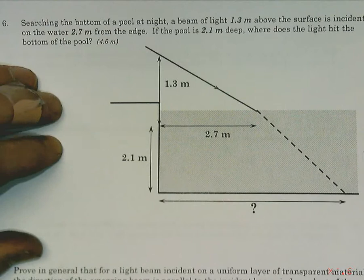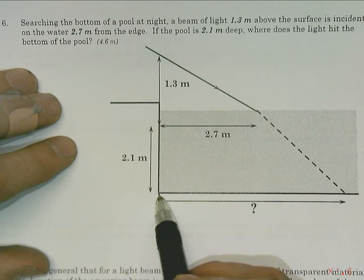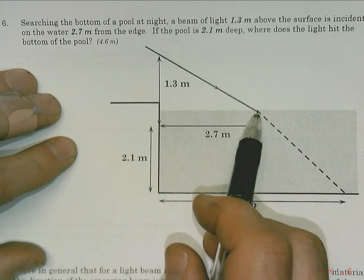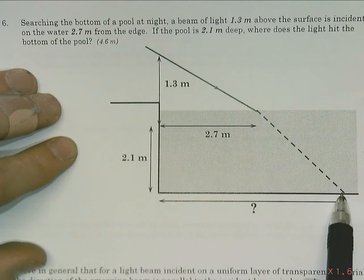Continuing our theme of fun and interesting Snell's Law problems, I'm asking you to find the distance from this edge of the pool to where a beam of light hits the bottom when the incident light comes in, hits the water, bends down, and hits at this point. So how far is it from here to here?